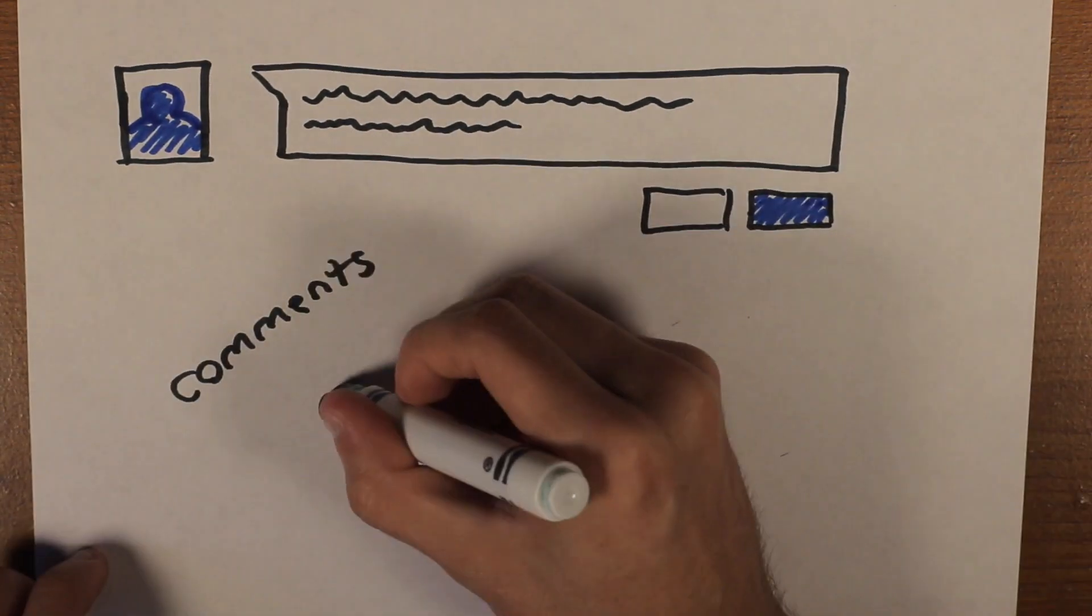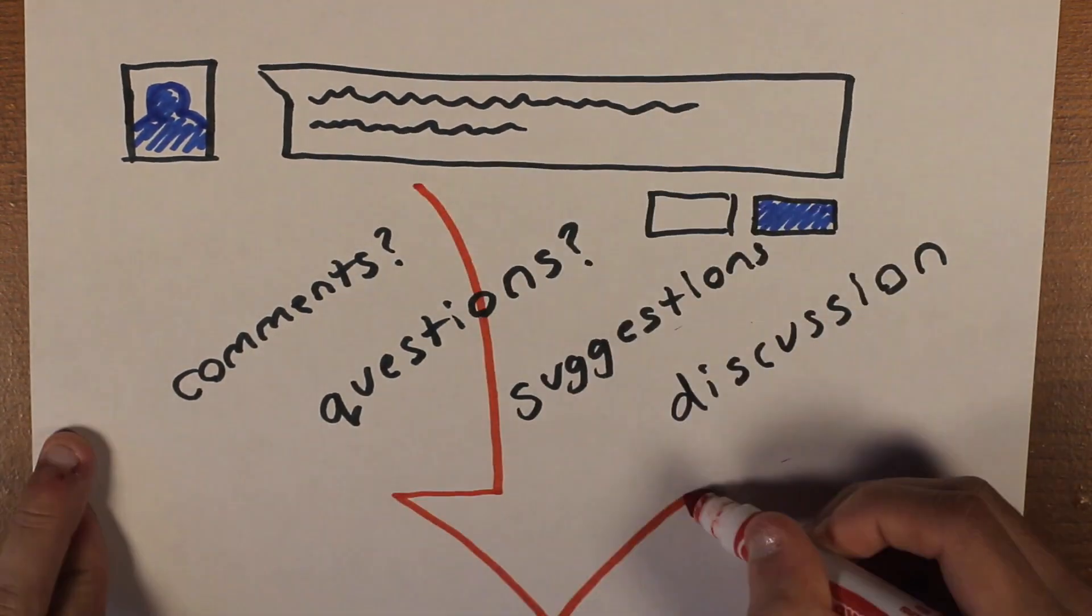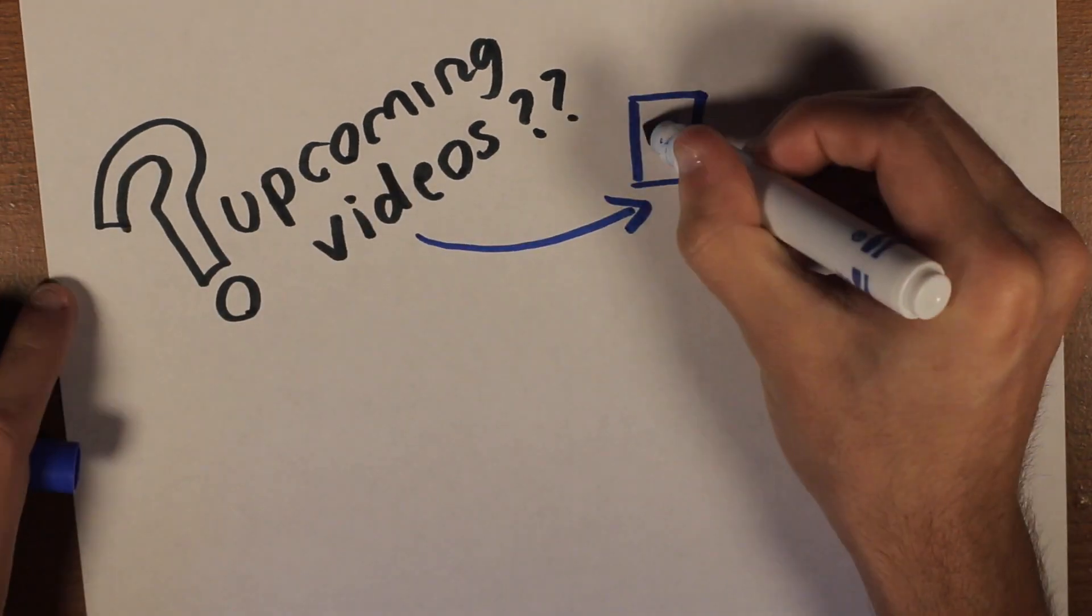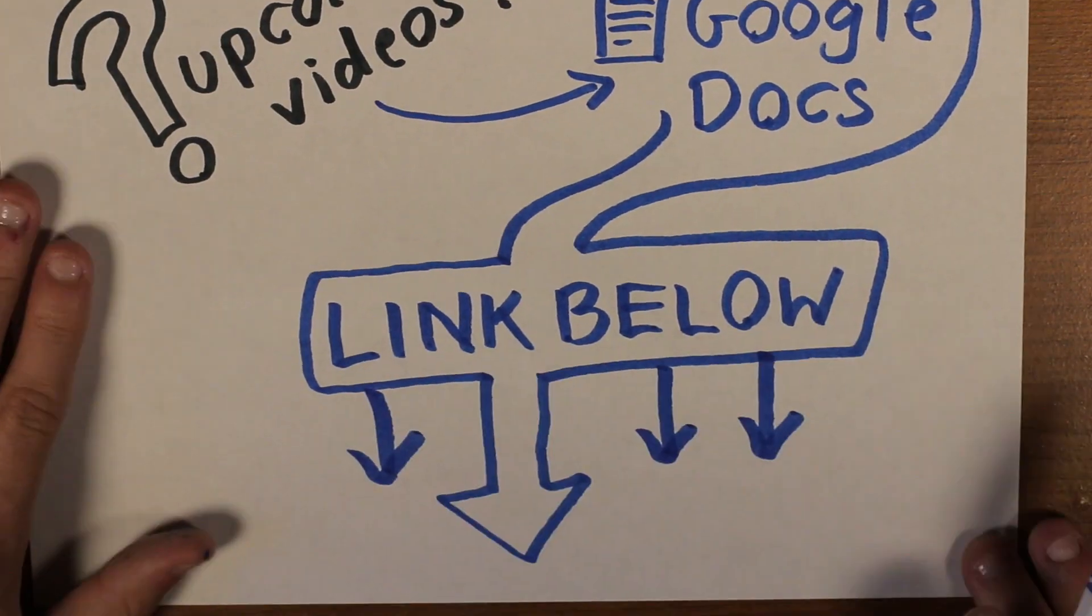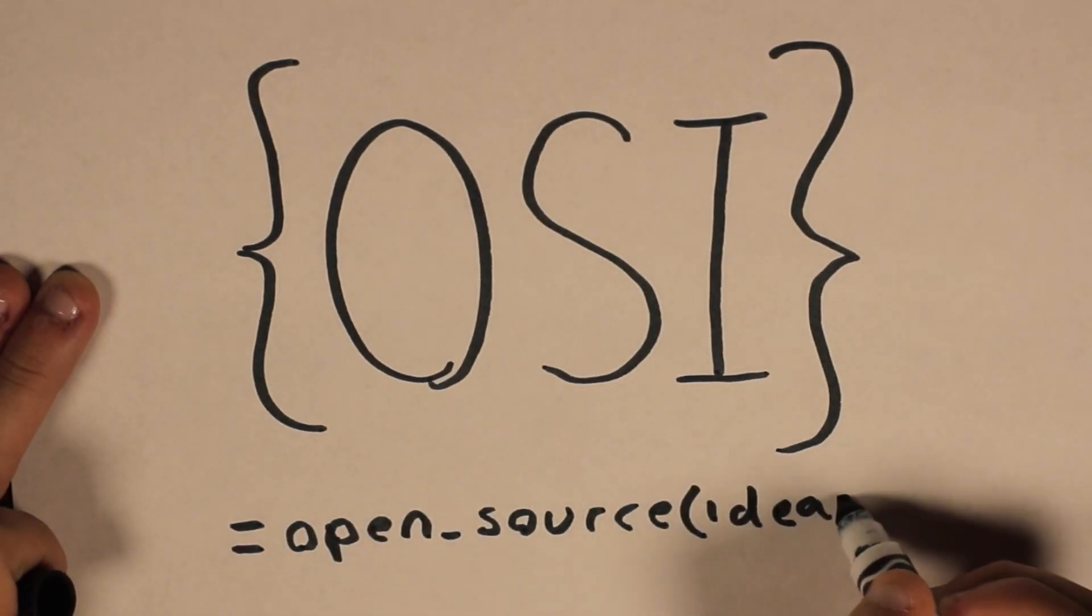Feel free to leave me a comment down below letting me know what you think about this idea. And if you're curious about upcoming videos, you can actually see all the ideas in the Google document in the description below. This is Jamie Gray with Open Source Ideas. Thanks for watching.